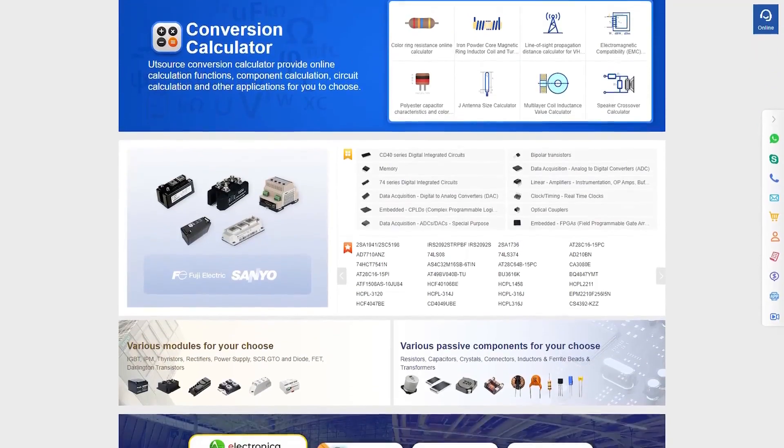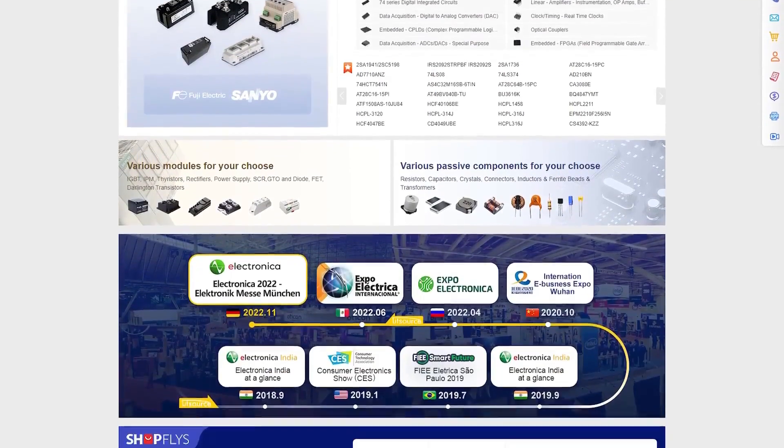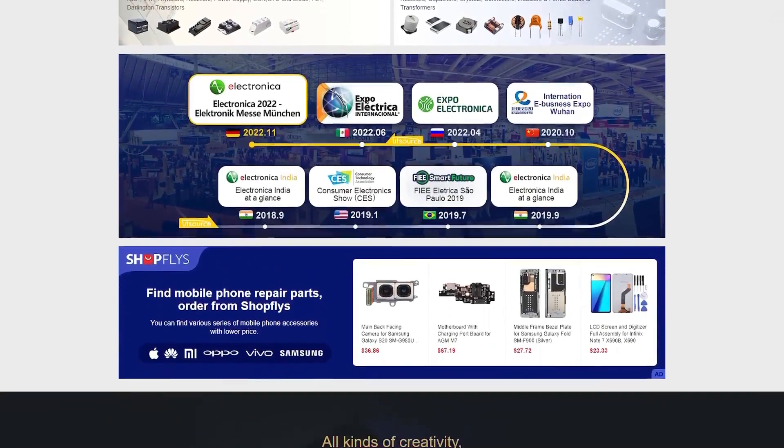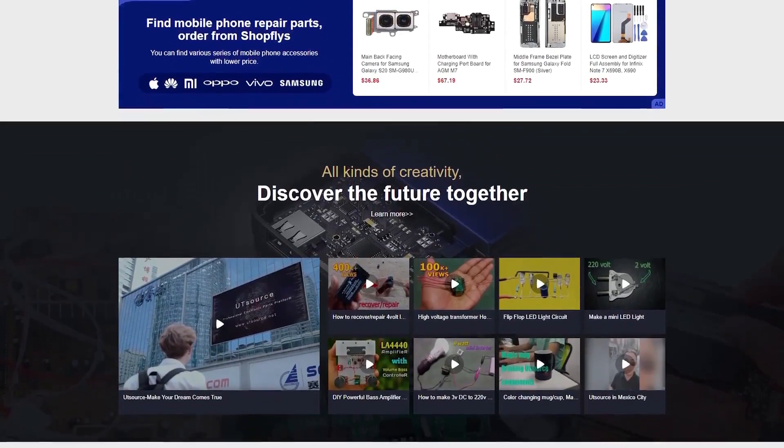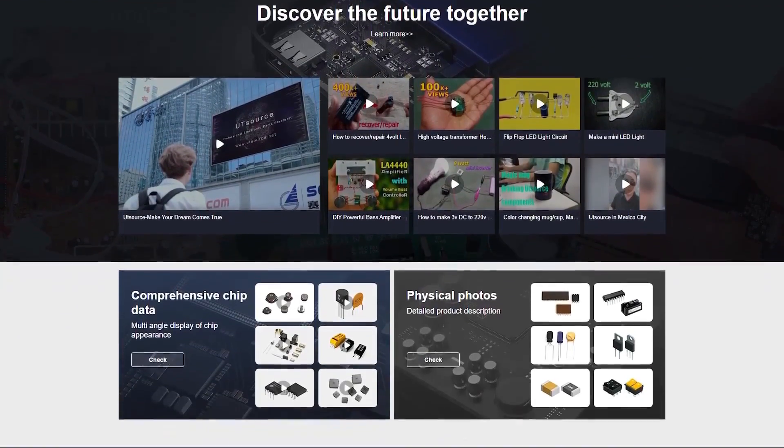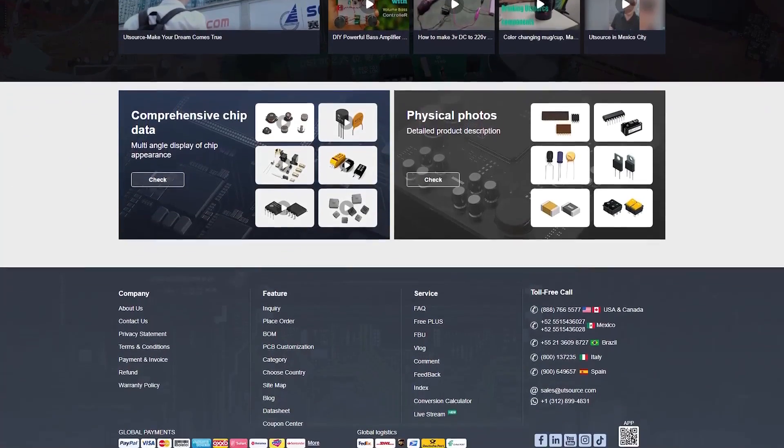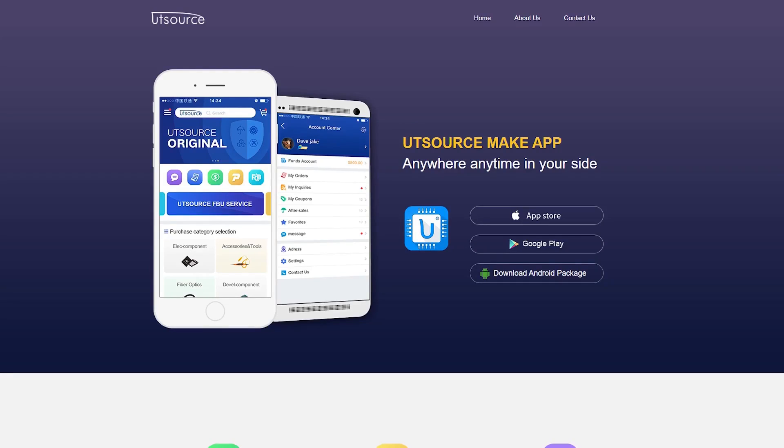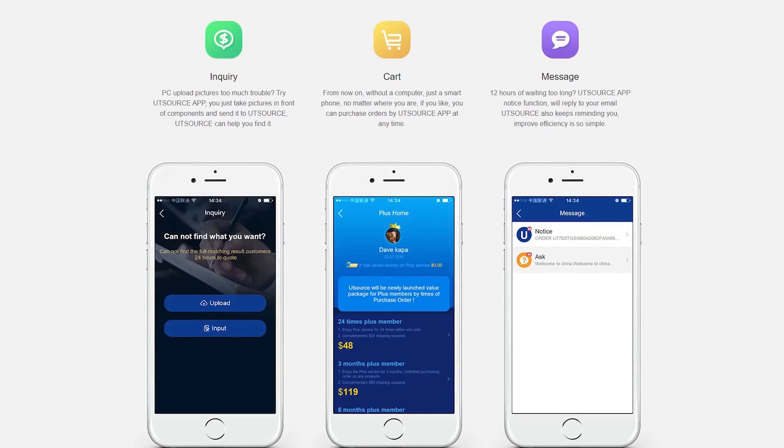Do you need electronic components? At utisource.net you can find all kinds of electronic components for your project and also accessories and tools. In the description of this video, you can find the link to visit the website.